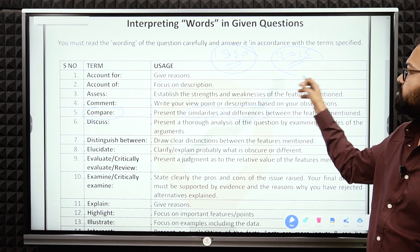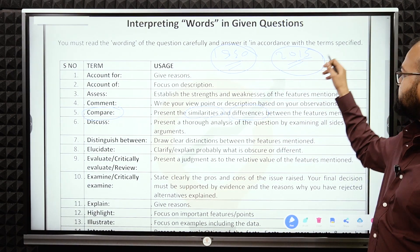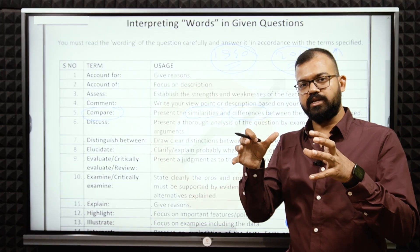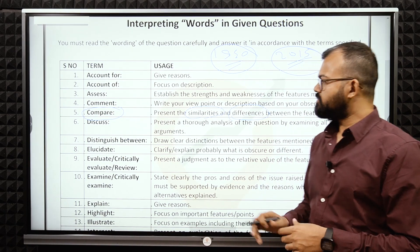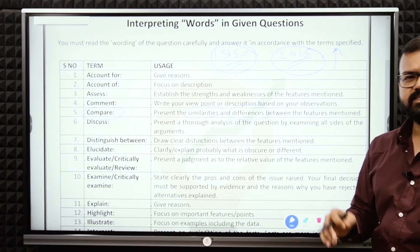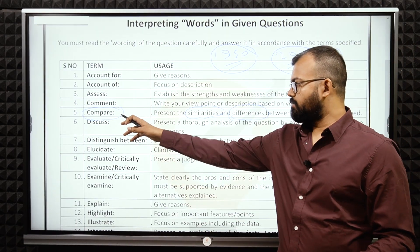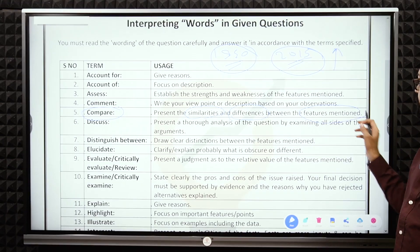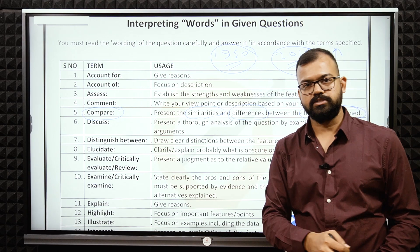But Niti Aayog established in 2015, the approach is bottom up. It means we will develop the villages, then district, then state, and then the whole country. The differences are many, but just to give you the example, comparison means similarities and differences between the features mentioned in that particular question.